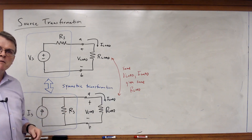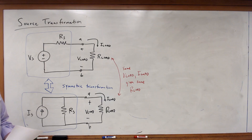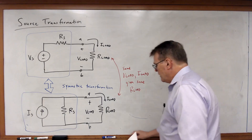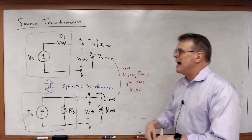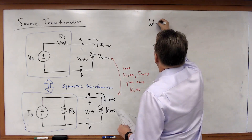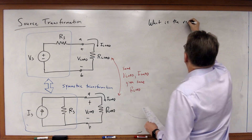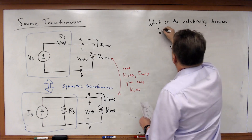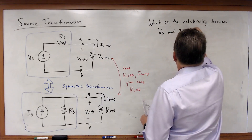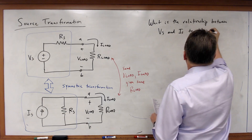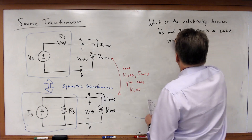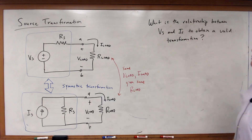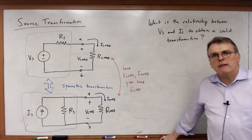As far as the load resistor is concerned, there's no difference between being connected to that circuit versus this one. I can transform this to that and back and forth — there's a symmetric transformation. Can I prove this? What is required to make this transformation valid? Well, clearly there must be some relationship between VS and IS.